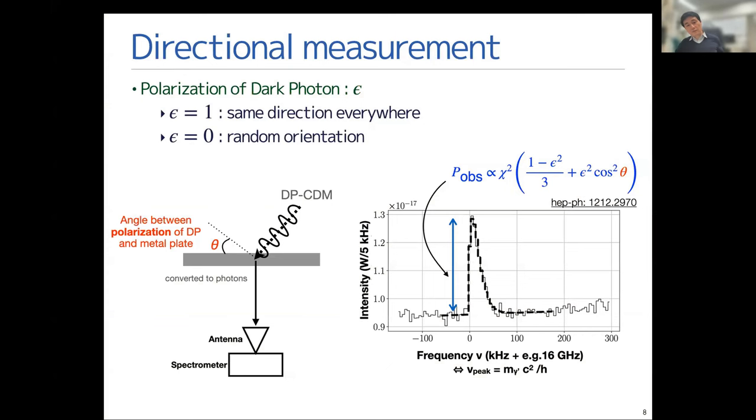Then, if the dark matter is polarized, the plane of the angle between the plane of the polarization and the metal plate, the power of the signal would depend on that angle. Using this information, we can measure the polarization of dark matter.